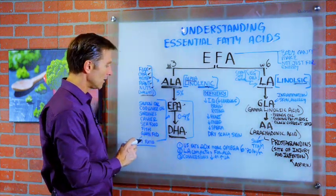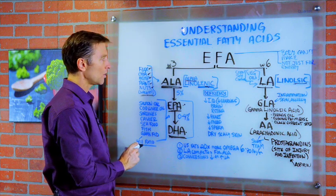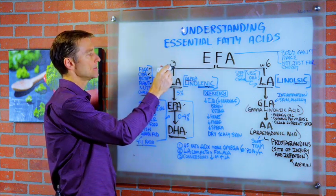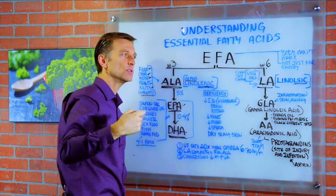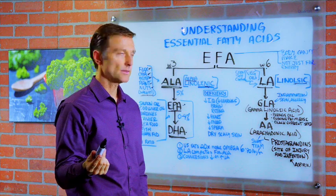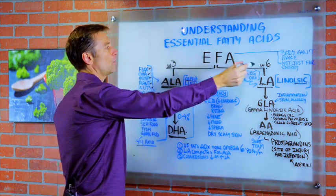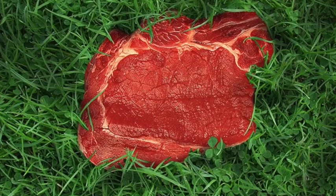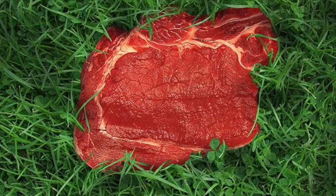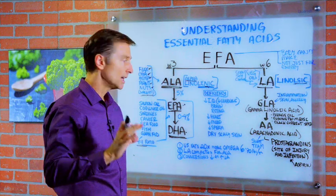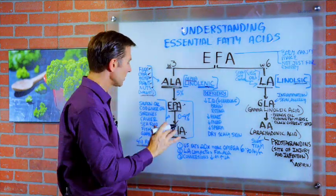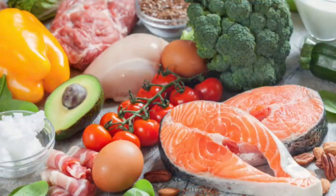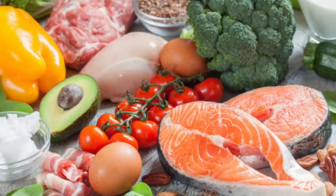When you consume grass-fed beef, it has a four-to-one ratio — four times the omega-3 to omega-6 — compared to grain-fed beef, which has a two-to-one ratio. So grass-fed gives you double the amount. Now, if you notice these are mostly animal products — there are exceptions. You can get DHA from algae, but typically you're going to get your DHA and EPA from animal and fish products.